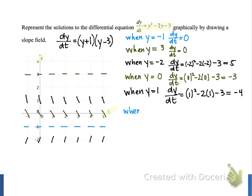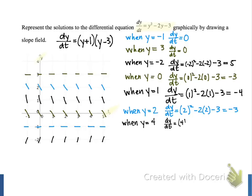When y is equal to 2, dy/dt gives a final result of negative 3. So those tangent lines are going to be the same slope as the ones we drew at y equals 0, and we can draw those as well. Then for our last y value, when y is equal to 4, we evaluate dy/dt at 4 and get a result of 5 — so we get fairly steep tangent lines again, just like we drew when y equals negative 2.